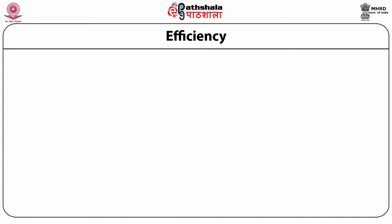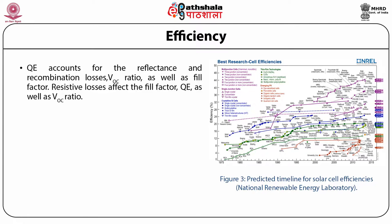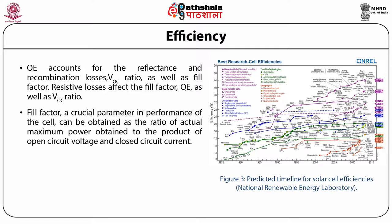Quantum efficiency accounts for the reflectance and recombination losses, VOC ratio, as well as the fill factor. Resistive losses affect the fill factor, quantum efficiency, and open circuit voltage ratio. Fill factor, a very crucial parameter in performance, can be obtained as the ratio of actual maximum power obtained to the product of open circuit voltage and closed circuit current.